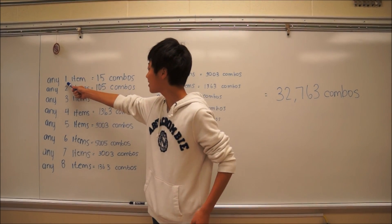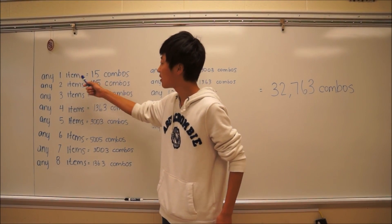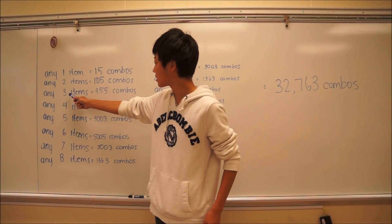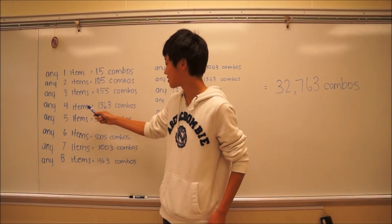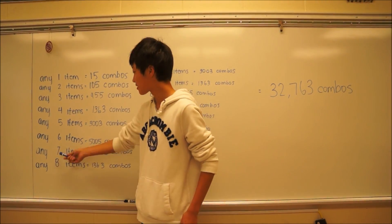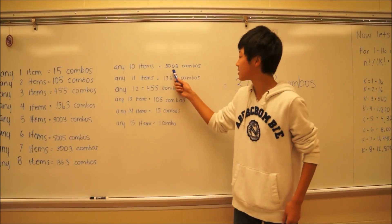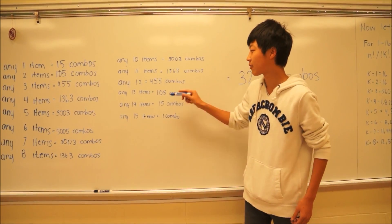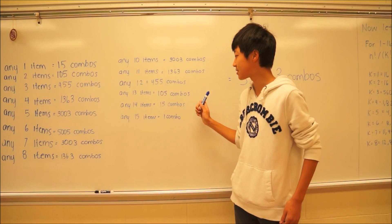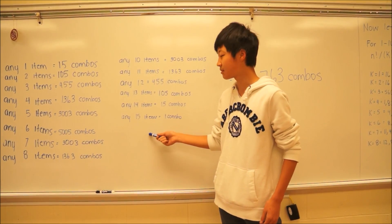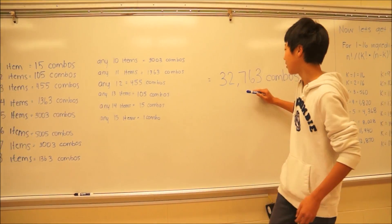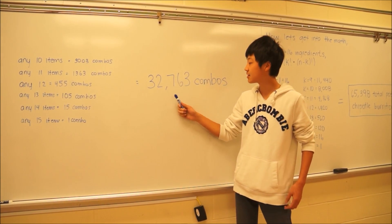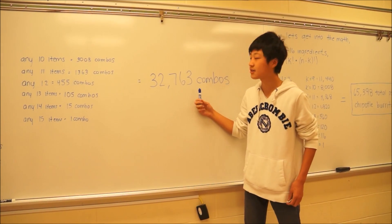So for one item, you can have fifteen combos. For two, it's one hundred and five. For three, it's four... For fourteen, it's fifteen, and for fifteen, it's one. So in all, you can have thirty-two thousand seven hundred and sixty-three combos.